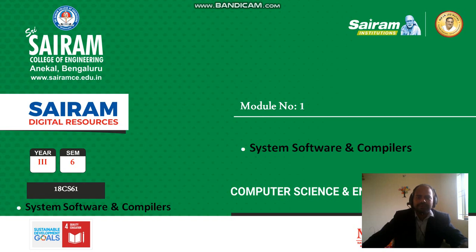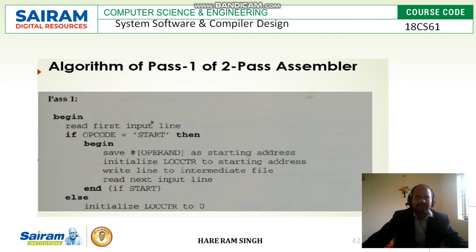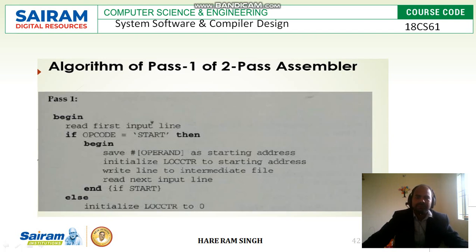Dear students, we are going to continue module 1. In this module, we are going to discuss assembler algorithms. There are two parts of the assembler algorithm: pass1 algorithm and pass2 algorithm. In pass1, the assembler generates the location address of the program, and pass2 generates the object code of the program. Let us start with the pass1 algorithm.